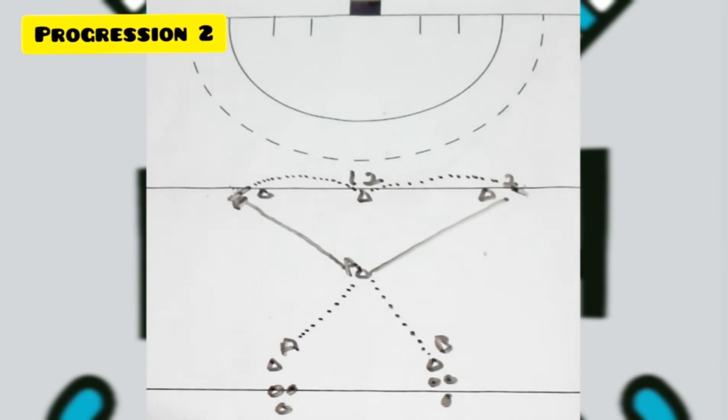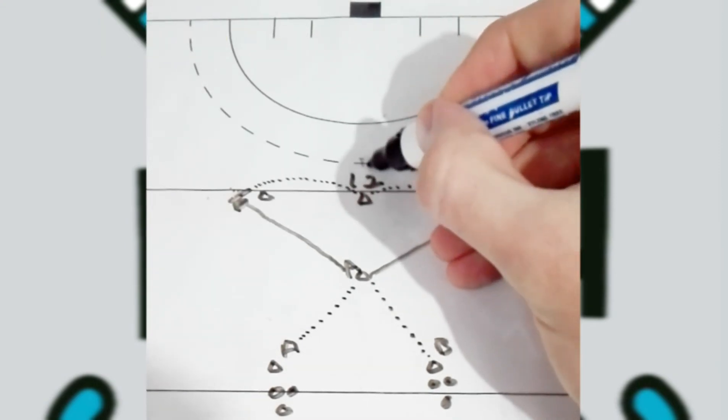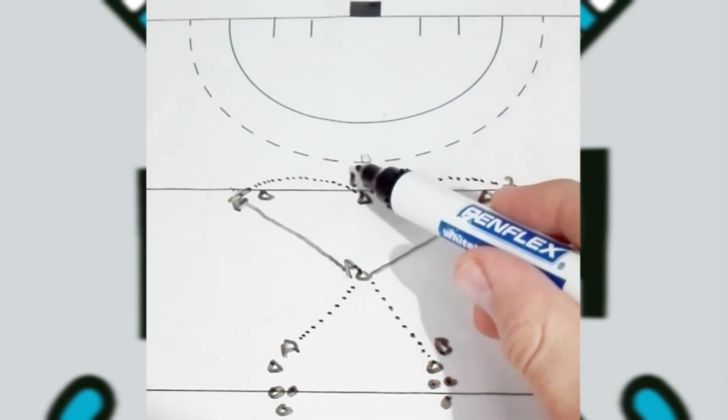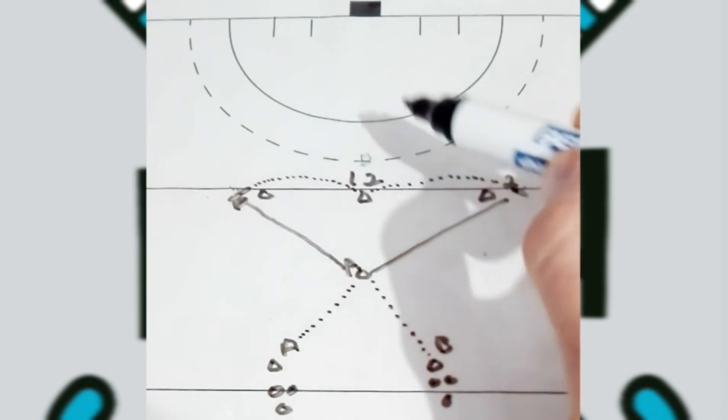For another progression you can put defenders in here. So now player one and player two will have pressure while they're receiving that ball over there.